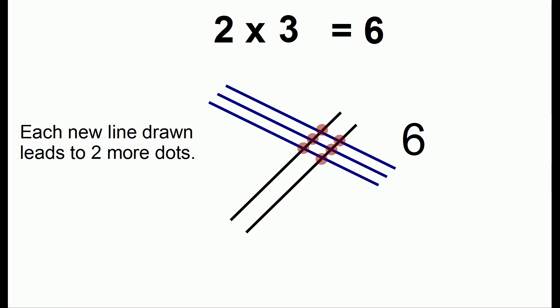The point of this is that each time we have another number, every new line leads to 2 more dots. This is exactly the process of multiplying by 2, so if we wanted to multiply any number by 2, we could place that many number of lines in the other direction and count up the number of dots.